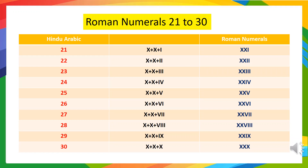26 means 10 plus 10 plus 6, so we will write it as XXVI. 27 means 10 plus 10 plus 7, so we will write it as XXVII. 28 means 10 plus 10 plus 8, so we will write it as XXVIII. 29 means 10 plus 10 plus 9, so we will write it as XXIX. 30 means 10 plus 10 plus 10, so we will write it as XXX.